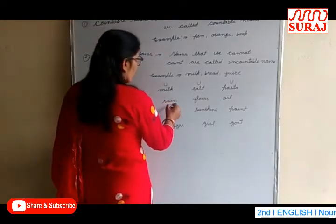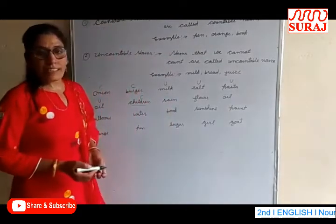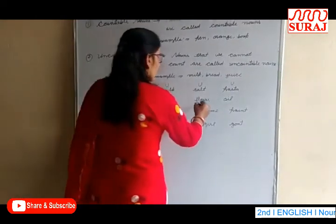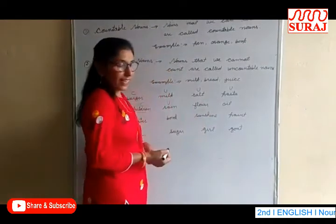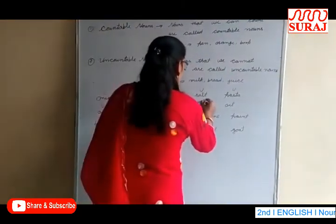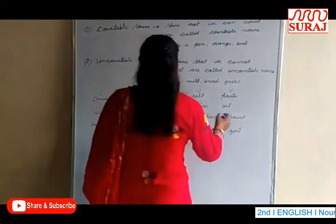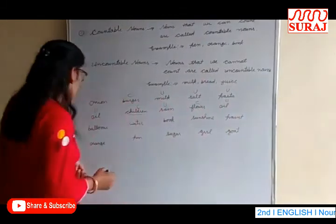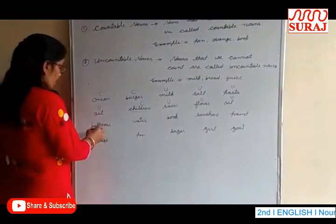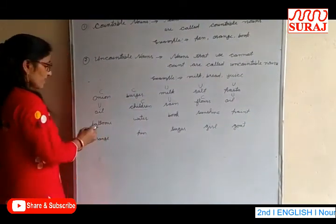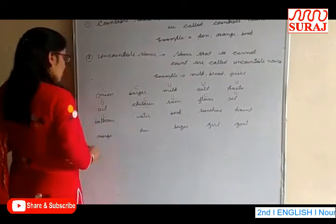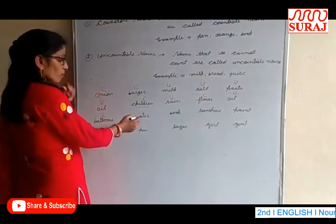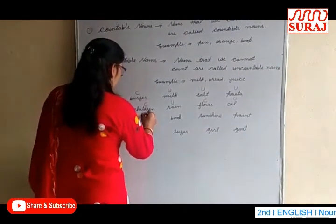Rain is uncountable. Flour is uncountable. Oil is a liquid — uncountable. Balloons — balloons is a plural form, so it is countable. Water is a liquid — uncountable.